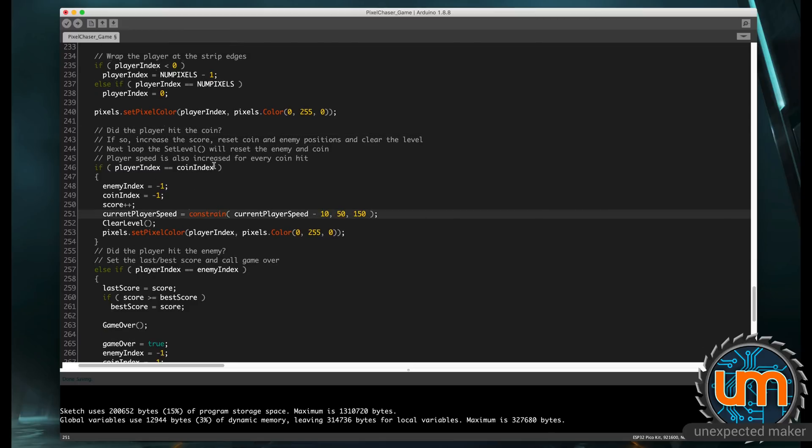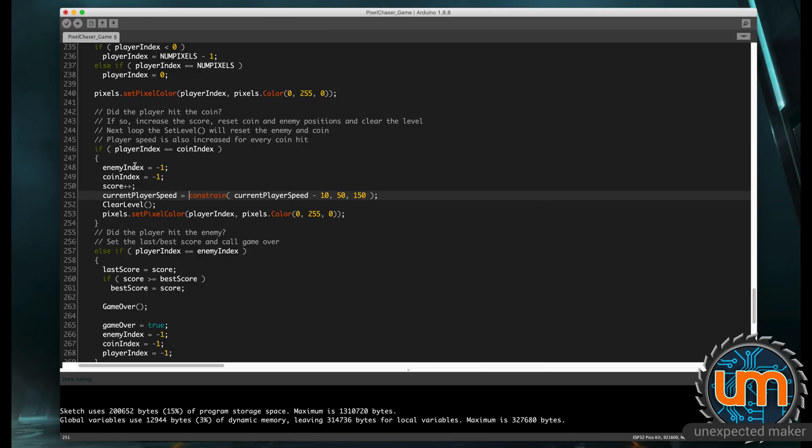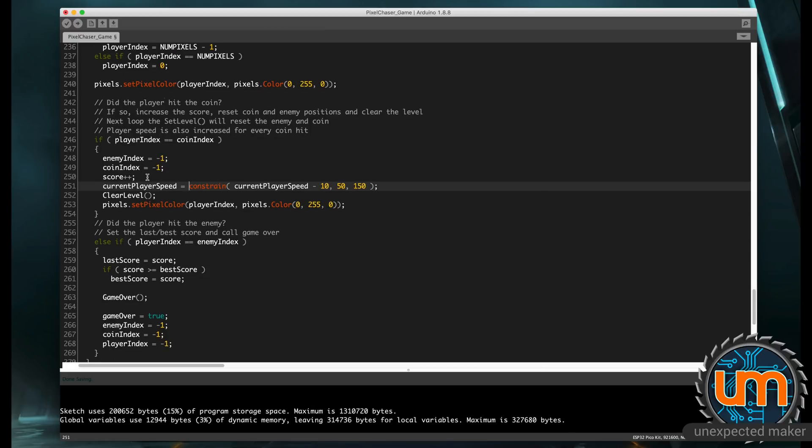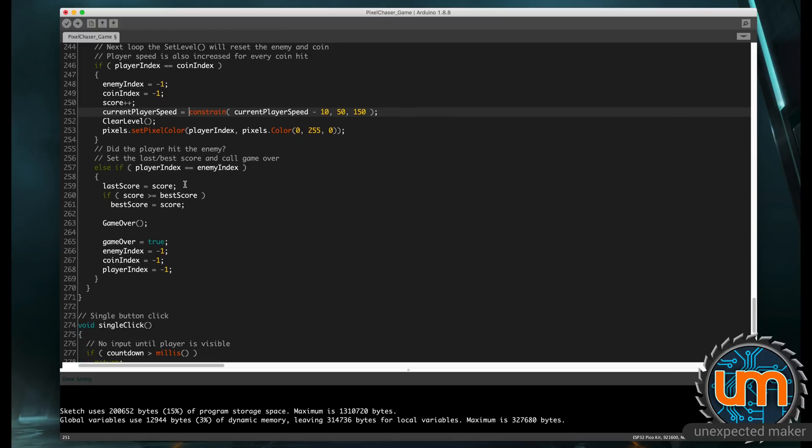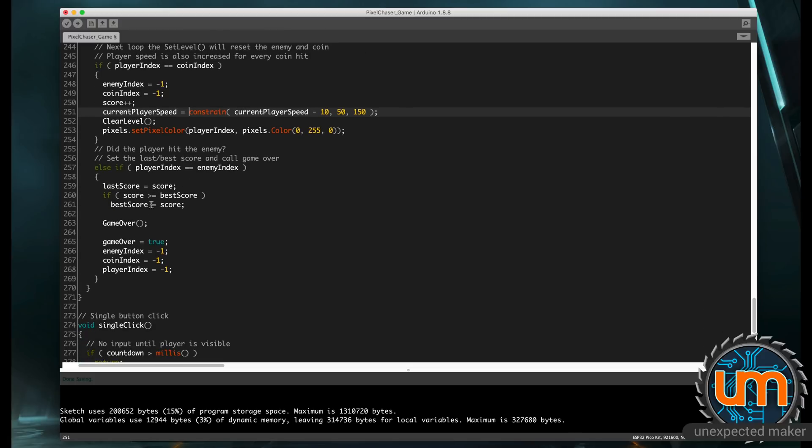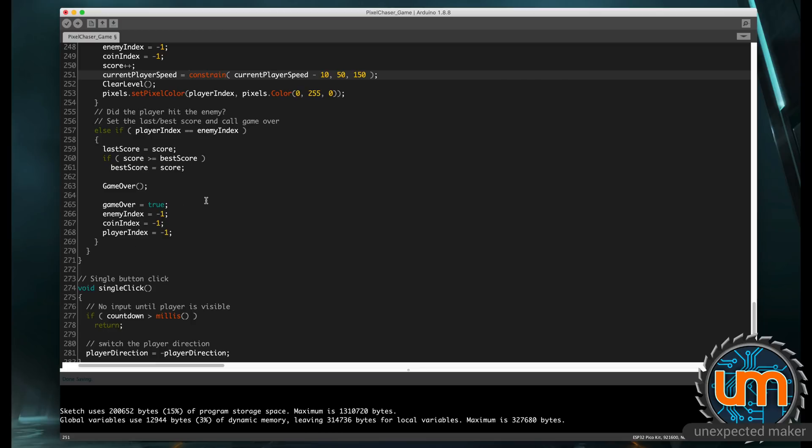So if the player is at the coin index, it resets the enemy in coin position, it increases the score, and it increases the speed of the player. If the player hits the enemy index, it does a game over, sets the last score and the best score, and resets some variables. Again, pretty straightforward.